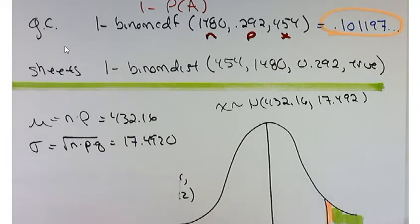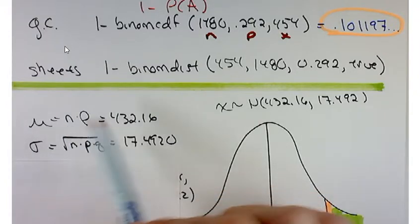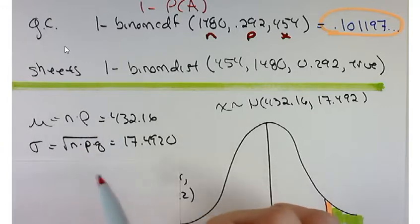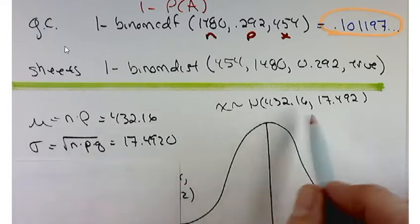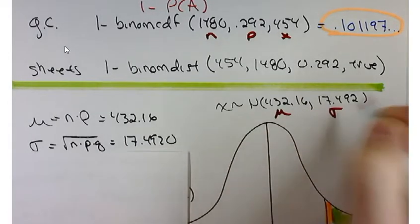So first things first, you need to find the proper mean and standard deviation. From a binomial random variable, the mean is n times p. The standard deviation is the square root of n times p times q. So you get these two numbers. That's the normal curve we're going to work with. One with that mean and that standard deviation.